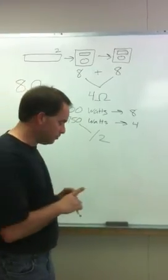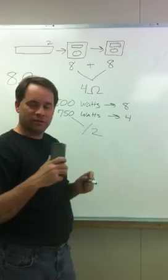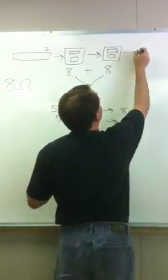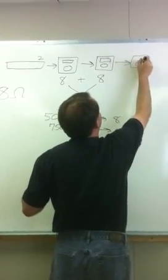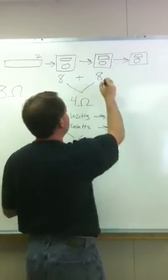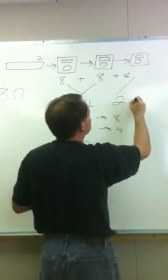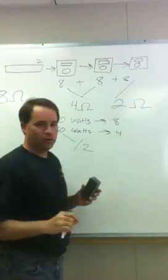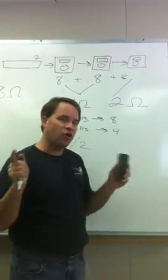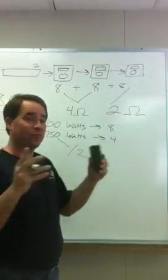One last thing about ohms that you want to remember. People will tell you that you can take three of these speakers on each channel of an amplifier. So if you go eight plus eight plus eight, now you have two ohms. But you'll notice when you look on the back of your speaker that it says eight ohm nominal. That's a word for normal. That means at room temperature.